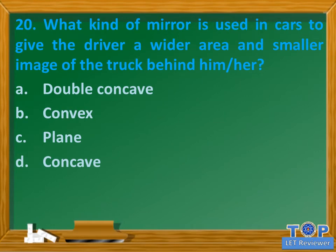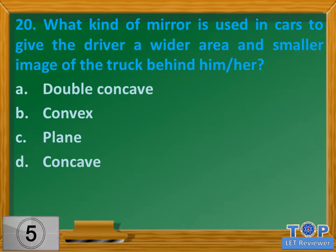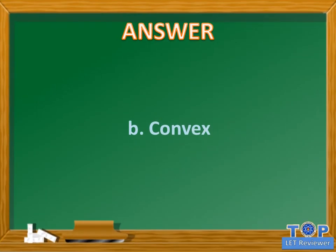Question number 20. What kind of mirror is used in cars to give the driver a wider area and smaller image of the track behind him/her? A. Double concave. B. Convex. C. Plain. D. Concave. Answer: B. Convex.